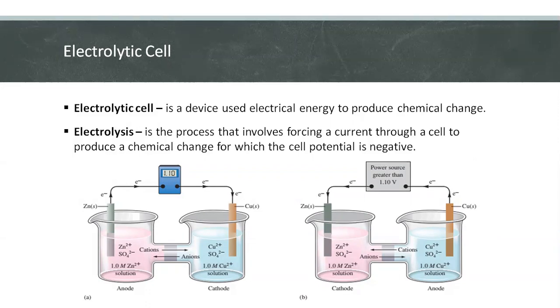Now we will consider the stoichiometry of electrolytic processes. That is, how much chemical change occurs with the flow of a given current for a specified time.